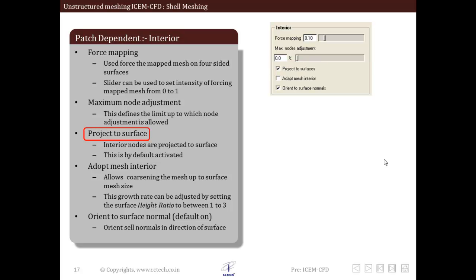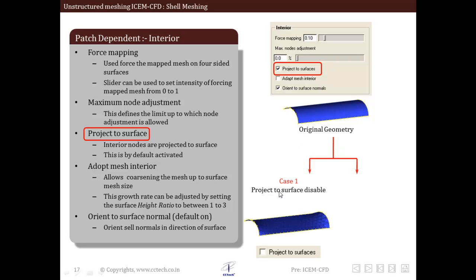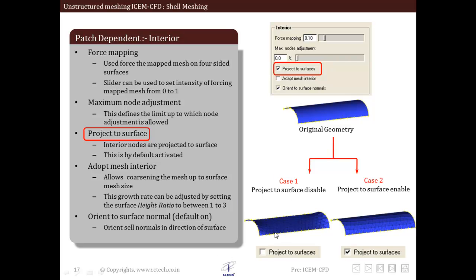Next is project to surfaces. Once a surface is meshed, interior elements should be projected to the surfaces so that they take the shape of the geometry which has been meshed. This option allows the user to specify whether the mesh should be projected onto the surface or not, but by default this option is always activated. In case 1 without the project to surface option, the mesh is not projected to the geometry. In case 2 with project to surface enabled, the mesh is actually projected onto the surface.